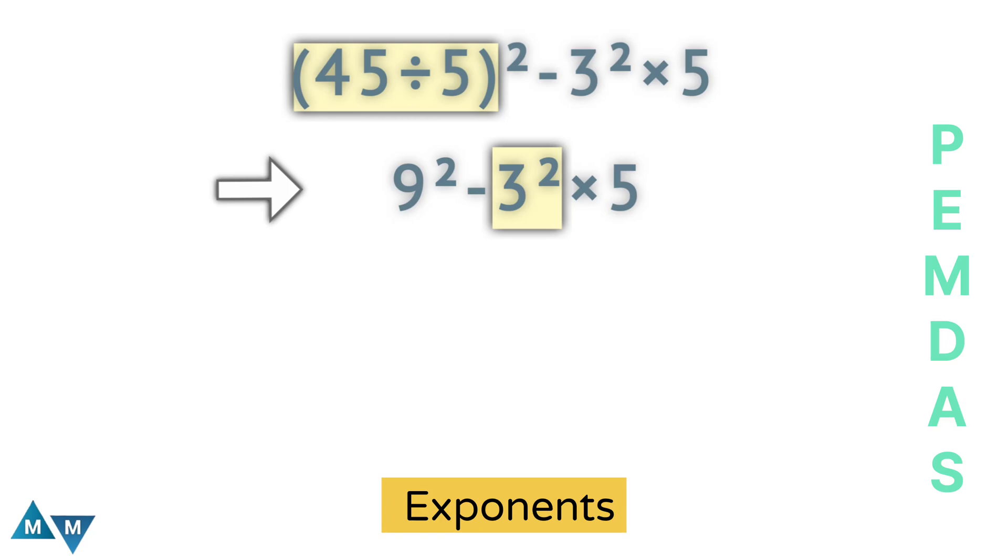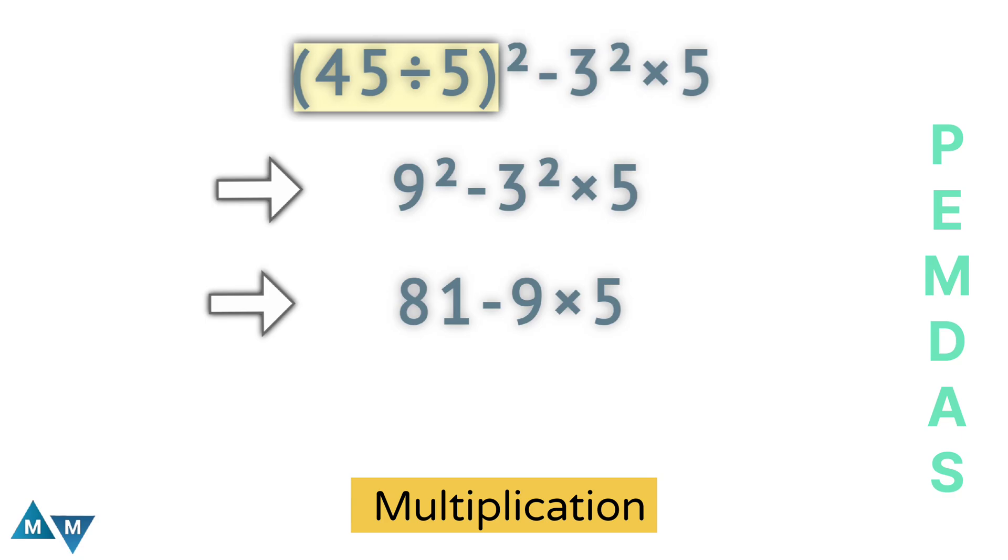Now we have 81 minus 9 times 5. Now, of course, multiplication has a higher priority than subtraction. So 9 times 5 will be our next move, which equals 45.